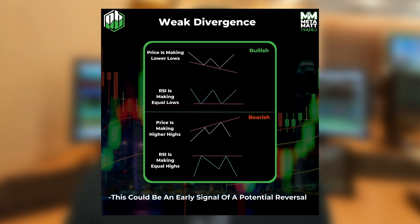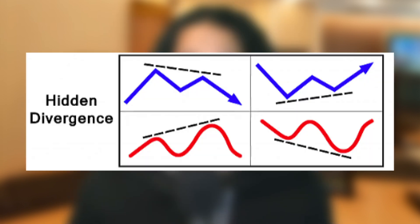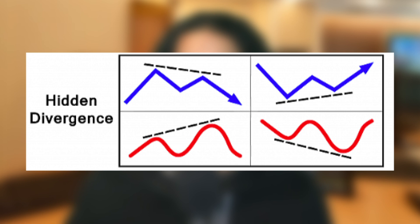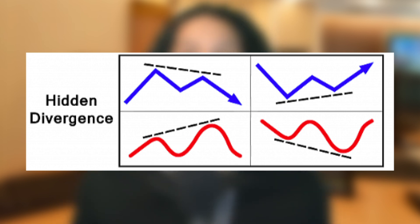There's also something called hidden divergence. This one is a little tricky because it is a continuation signal, unlike the others. Bullish hidden divergence is when the price is making higher lows and the RSI is making lower lows. Bearish hidden divergence is when the price is making lower lows and the RSI is making higher lows.